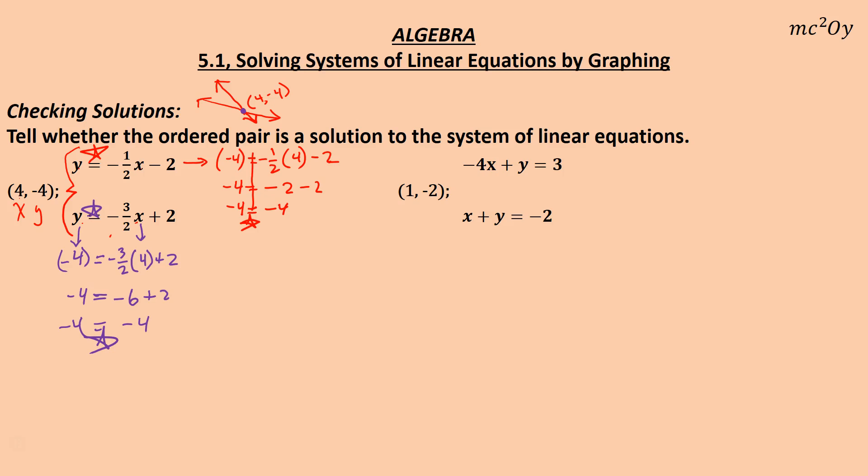It's true for this. That means this is actually the point at which those two lines intersect. That is a solution to the system. Now, if the point wouldn't have worked in either of them, it has to work in both. If it doesn't work, if it only works in one, that means it's on that line. But it has to be where they cross. So it has to be on both lines. So if it doesn't work in one of the lines, you're done. You just don't even have to test anymore.